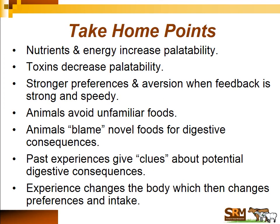A few take-home messages: Nutrients, energy, and food increase palatability — nutritious foods with good energy sources are more palatable. Toxins decrease palatability. Stronger preferences and aversions are formed when feedback is strong and occurs quickly after eating. Animals avoid unfamiliar foods — neophobia — and when a novel food causes negative or positive consequences, they tend to blame the novel food. Past experiences give clues about potential digestive consequences of new foods. And the experiences during foraging change the body, which changes future preferences and intake.